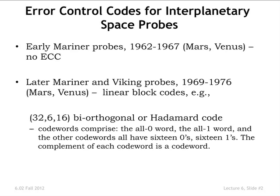Linear block codes are what we're talking about. This would be the typical parameters for such a code: 32 bits per block, six data bits, and a minimum Hamming distance of 16. A particular kind of code called a biorthogonal code, or a Hadamard code, which had specific characteristics and symmetries that helped with the decoding.